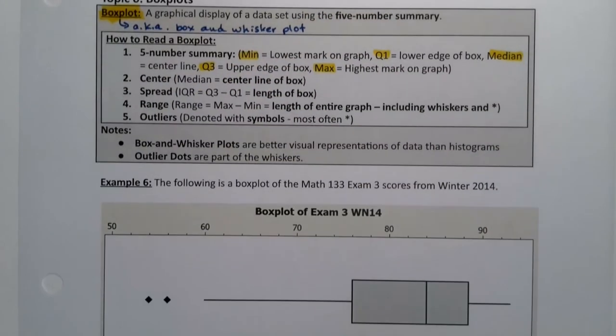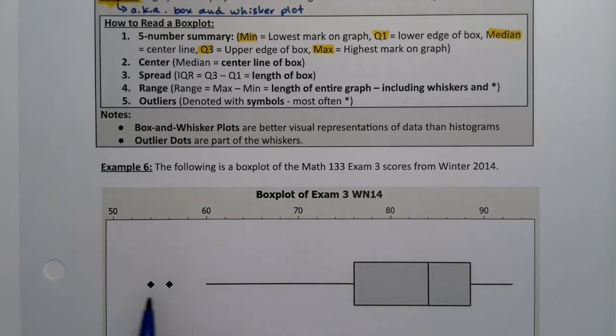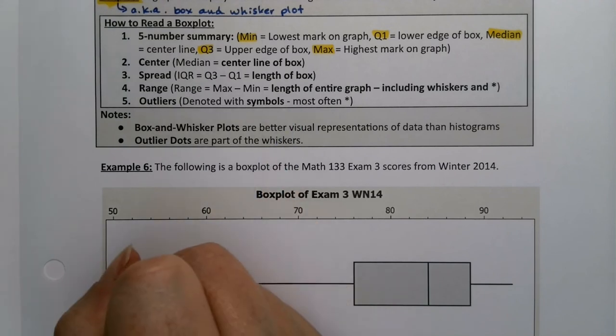All right, so let's look at a box-and-whisker plot, a box plot, and we'll see what we're talking about. So the min is the lowest mark on the graph, so this is definitely the minimum over here.